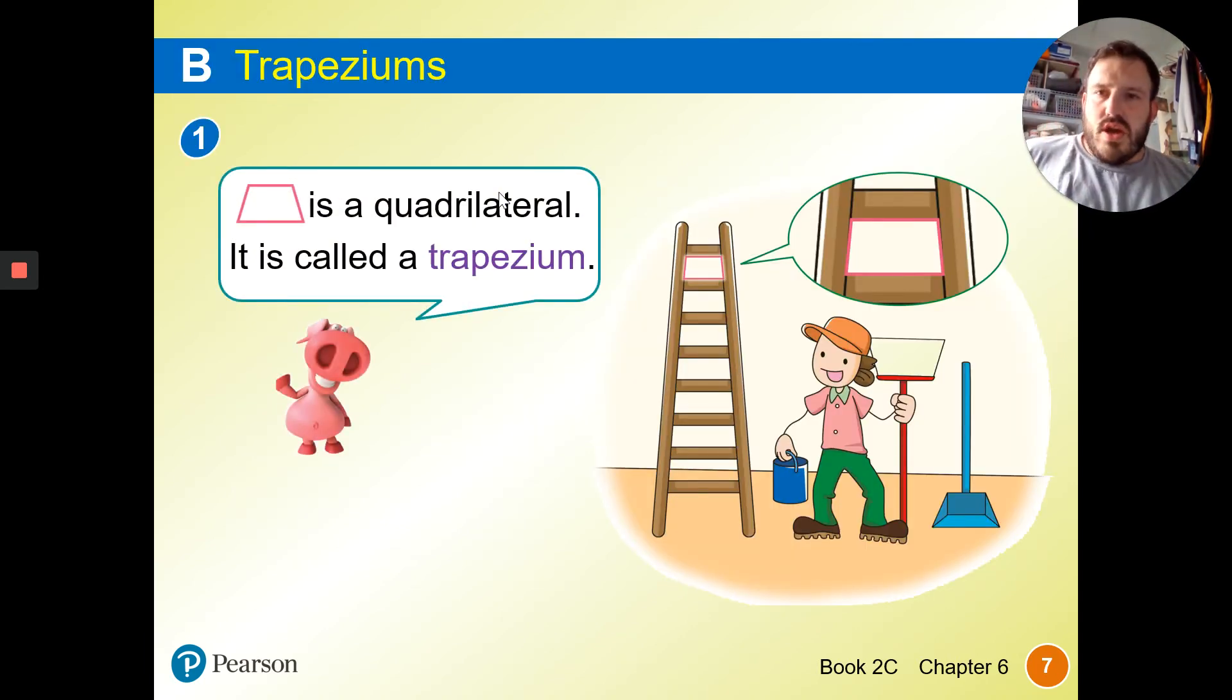Trapezium. This is a quadrilateral, and it's called a trapezium. We can see these stairs, the two lines, the two ladders are moving up to each other. If I take two pencils and hold them, you can see that they're moving up towards each other. This quadrilateral shape made in the middle is called a trapezium.